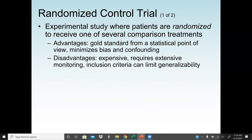Next we move to experimental studies — the randomized controlled trial. One of the biggest advantages of experimental studies is that there is no confounding variable, because it's like working in a lab during an experiment, so no extraneous variable will distort the results. Experimental studies also lead us directly to cause and effect. Patients are randomized to receive one of several comparison treatments. The advantage is that it is the gold standard from a statistical point of view and minimizes biases and confounding. The disadvantage is that it is very expensive, requires extensive monitoring, and inclusion criteria can limit generalizability.